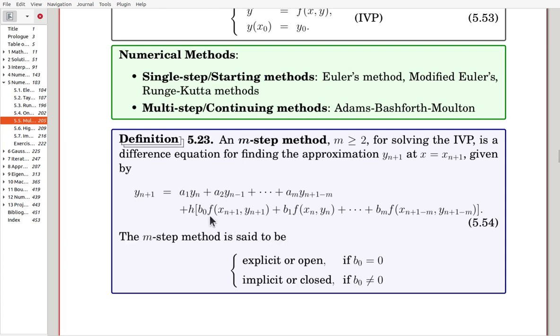The first term is including Y_M+1, the value at the last step. Once b is 0, then they will disappear, and the evaluation Y_M+1 is explicit. Otherwise, we call the algorithm implicit.